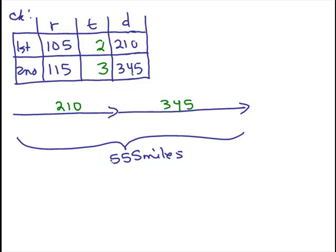And just make sure, does that make sense that that would be a total 555 miles? So we have 210 plus 345. Does that add up? Let's go over here. 210 plus 345. So yeah, that checks.